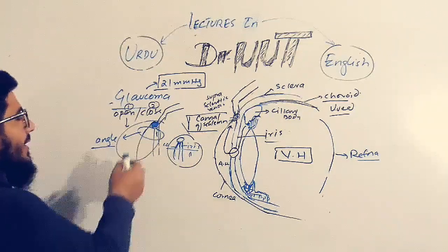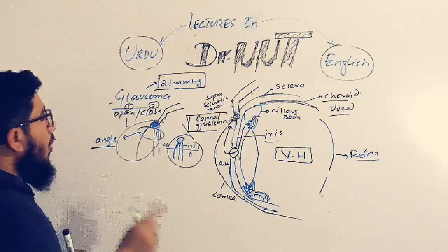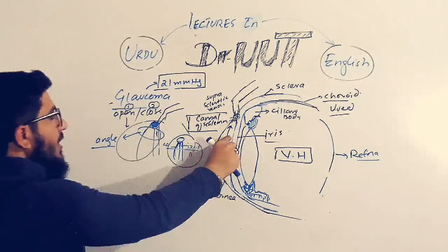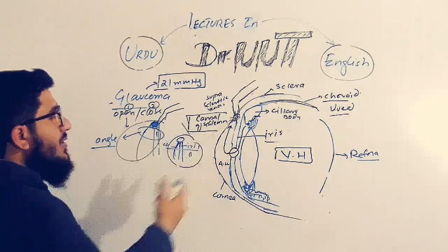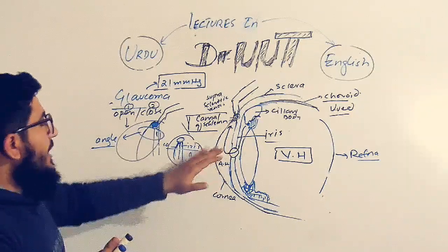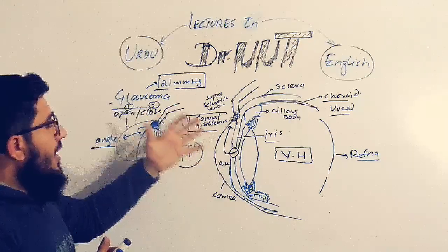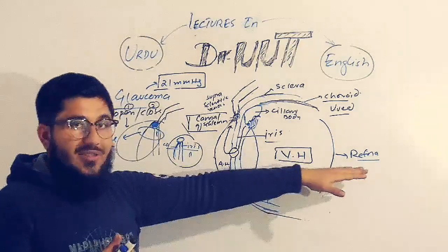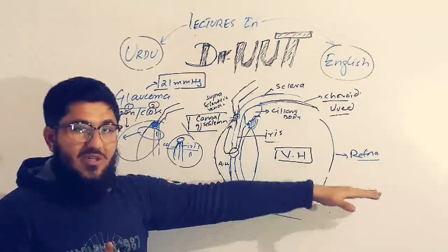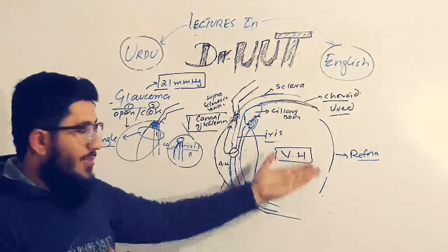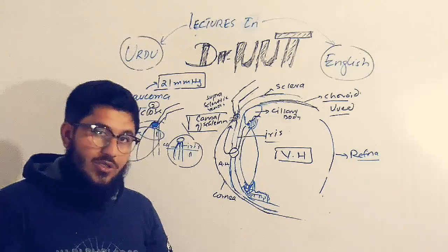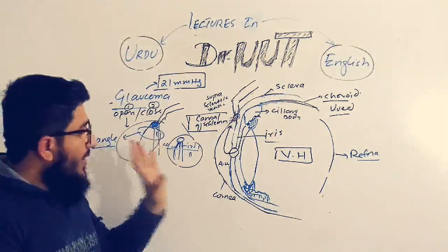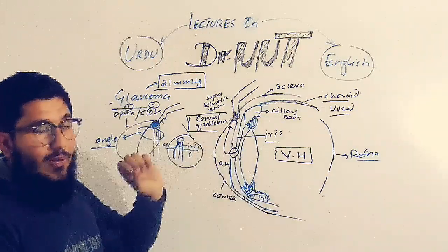In closed-angle glaucoma, the angle is closed but the canal of Schlemm is open. In open-angle glaucoma, the angle is open but the canal of Schlemm is closed due to trabecular meshwork. In both cases, aqueous humor accumulates, pressure increases, and the retina is damaged, resulting in loss of visual sensation — that's glaucoma.